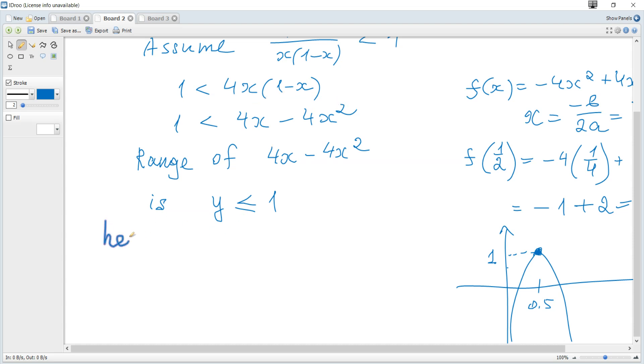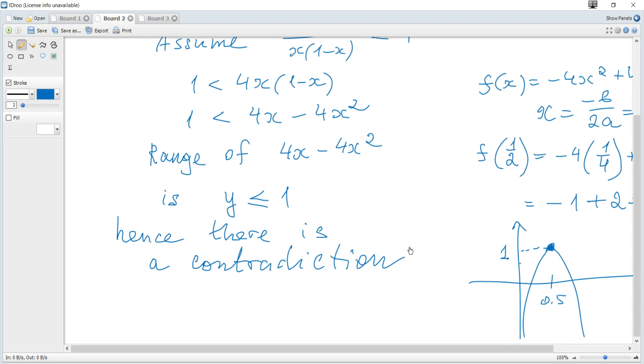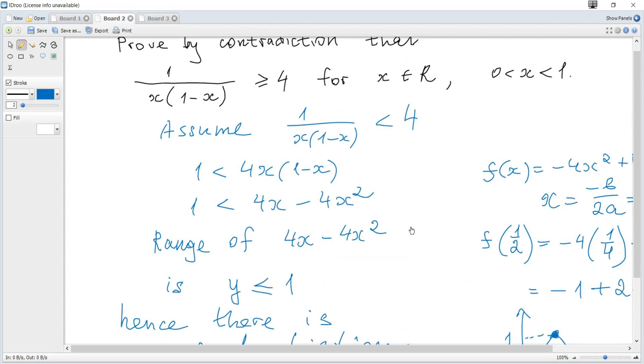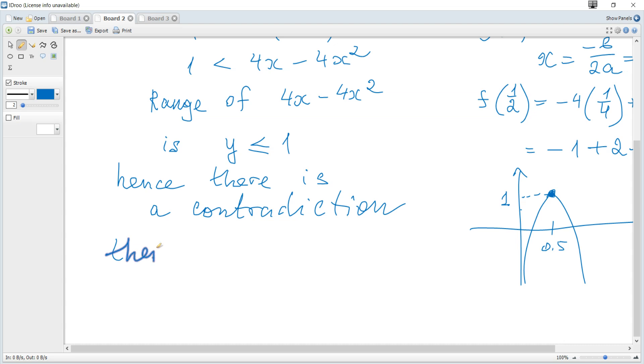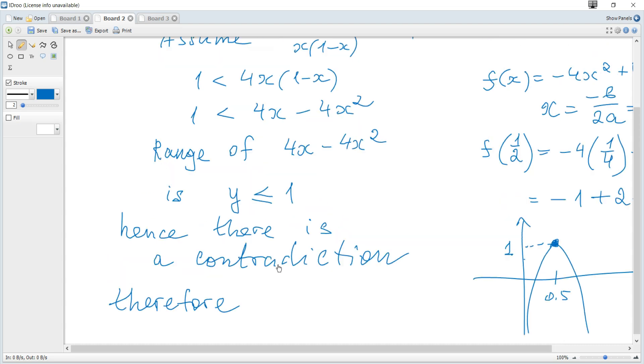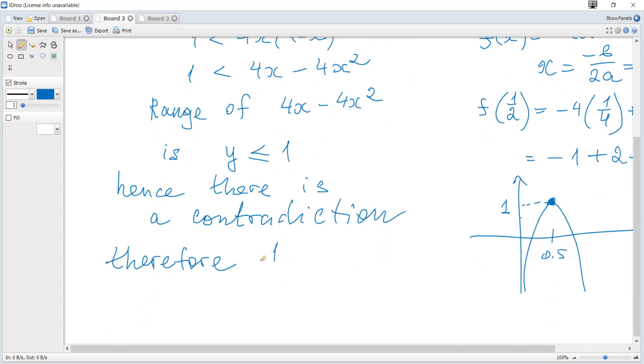Hence there is a contradiction. Our assumption is not true. Therefore, 1/(x(1-x)) ≥ 4.